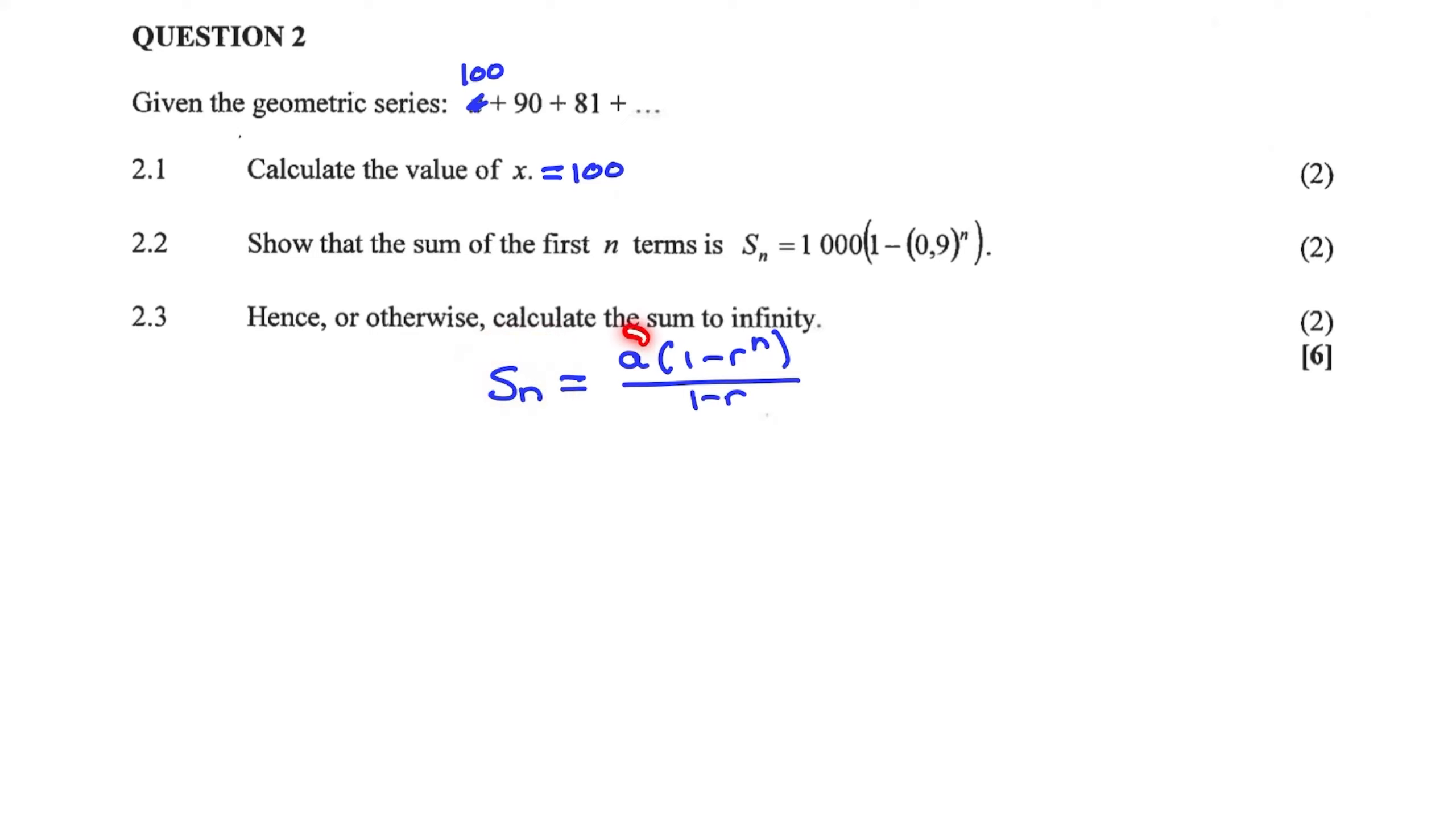And what we need is an A value and an R value. Now the A value is the first term in the geometric series. So A is equal to 100. And R is the constant ratio between terms. So that is 90 over 100 or 0.9.